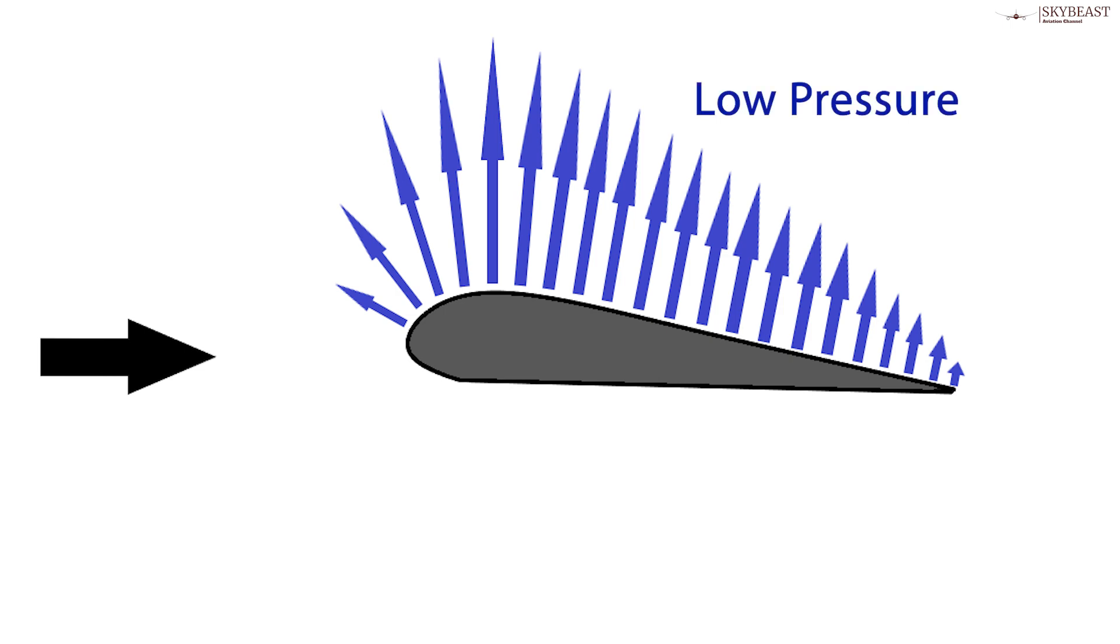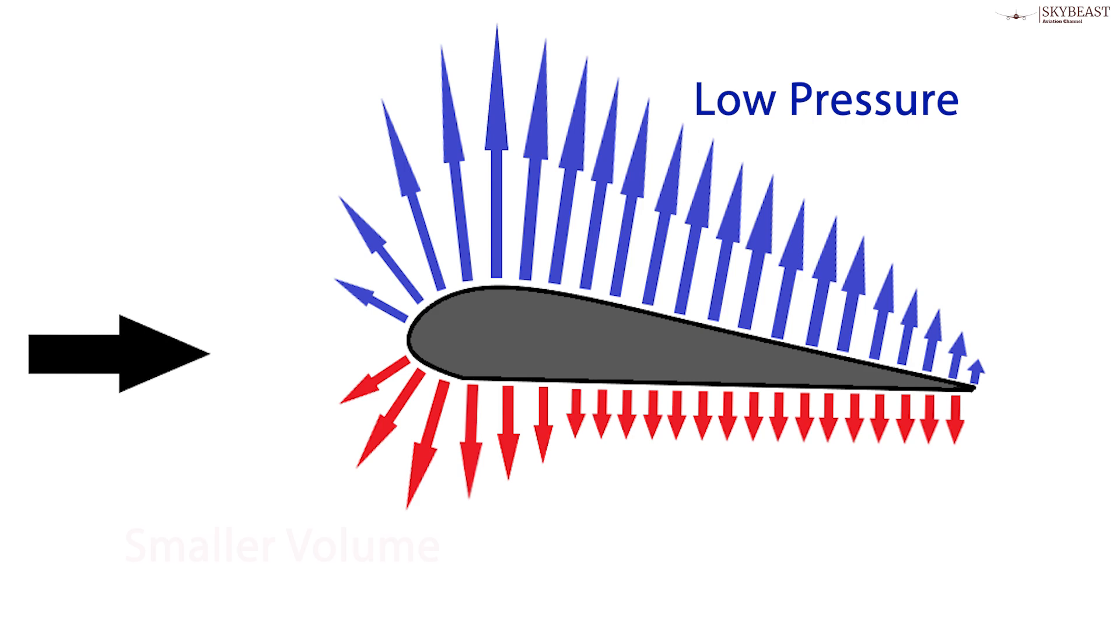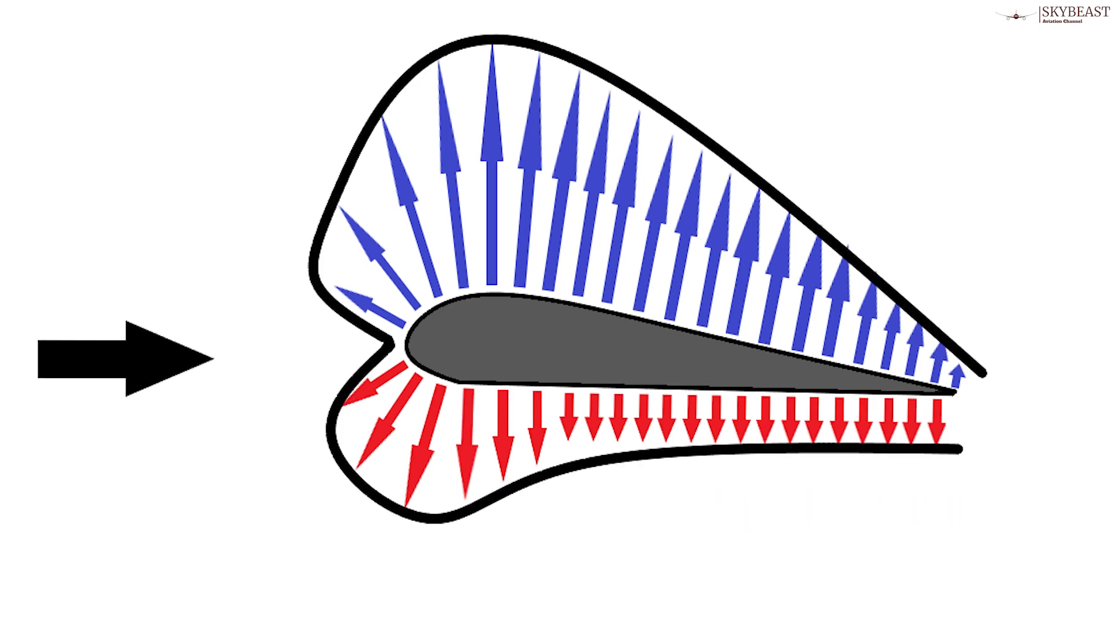For exactly the opposite reason, the pressure of the air under the wing increases. The advancing wing squashes the air molecules in front of it into a smaller space. The difference in air pressure between the upper and lower surfaces causes a big difference in air speed, not the other way around, as in the traditional theory of a wing.